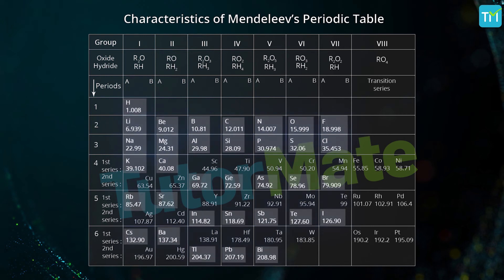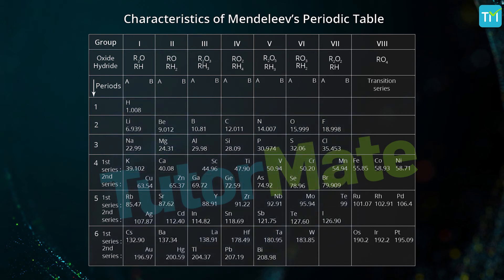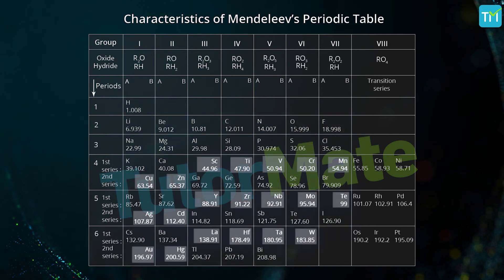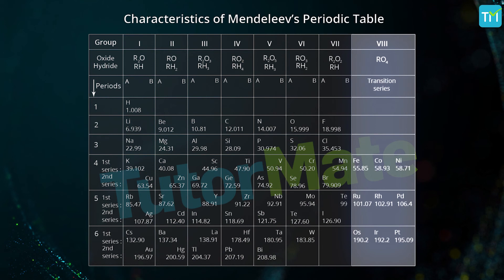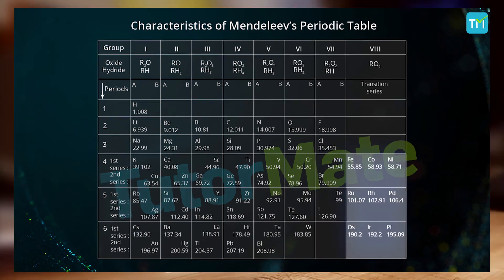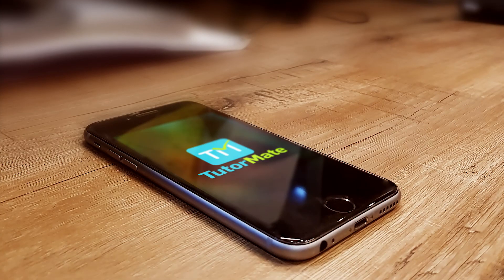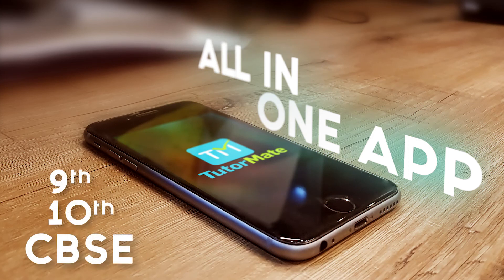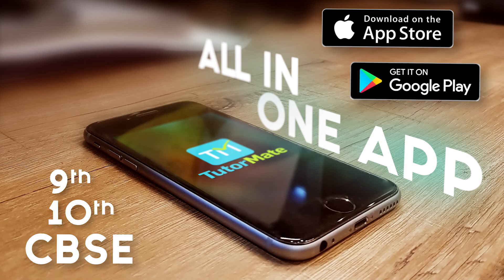Except for group 8, each group is divided into subgroups A and B. The elements on the left-hand side, called subgroup A, are known as representative elements, whereas elements on the right-hand side, called subgroup B, are called transition elements. Group 8 contains 9 transition elements in 3 sets, lying in the 4th, 5th, and 6th periods.